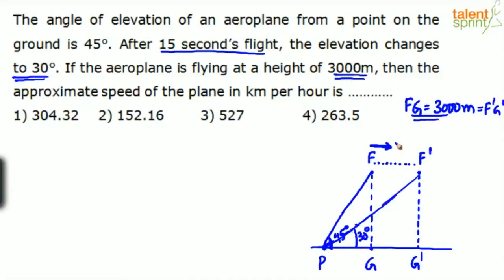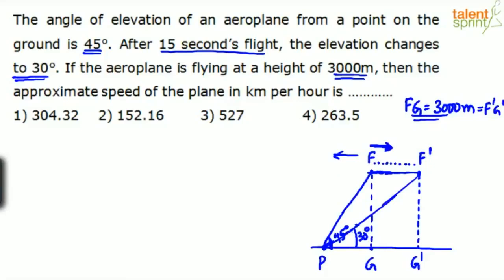How do you know the aeroplane is flying towards the right? When you are closer to the object, the elevation is more. Initial elevation was 45 degrees; new elevation is just 30 degrees. That means the plane has moved away from the point of observation P. Angle of elevation is less, meaning the distance is more. F to F dash means the plane has moved away from P — that is the reason the angle of elevation has come down. If it were moving closer, the angle would increase, but here it decreased from 45 to 30.